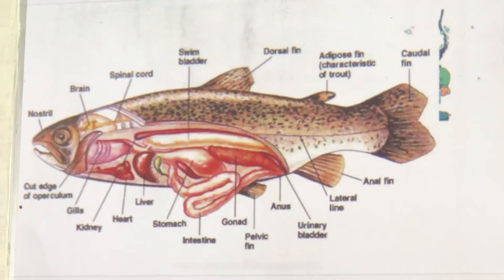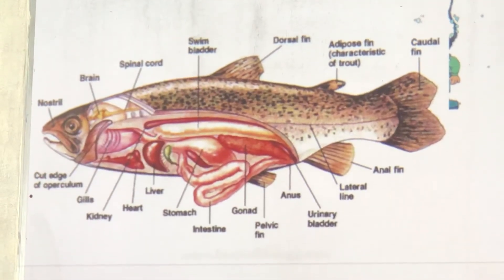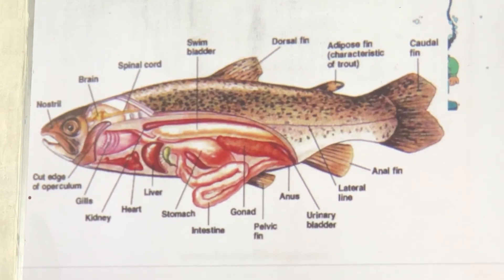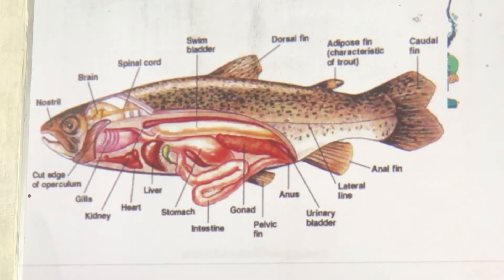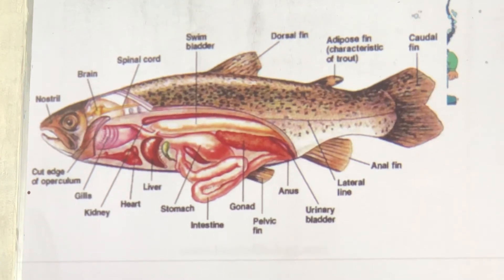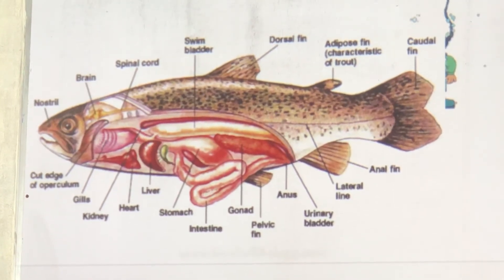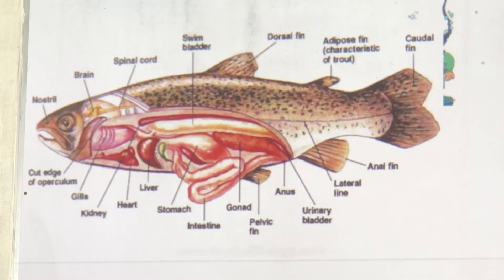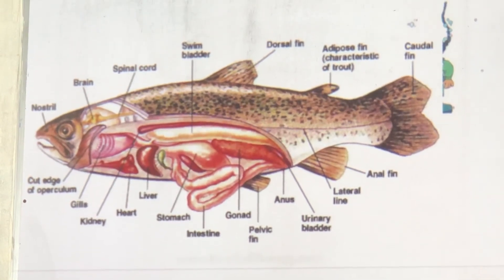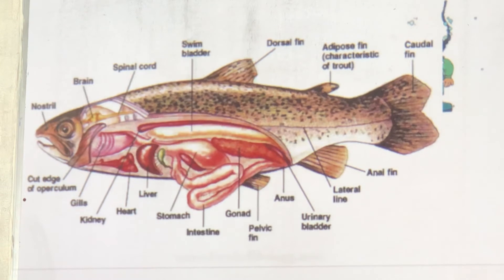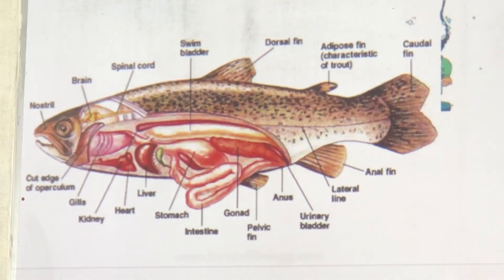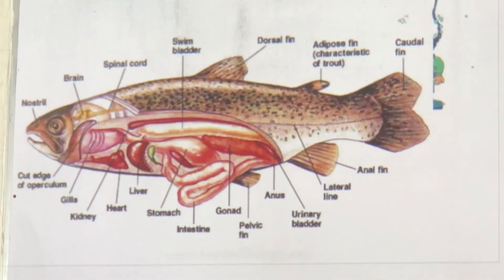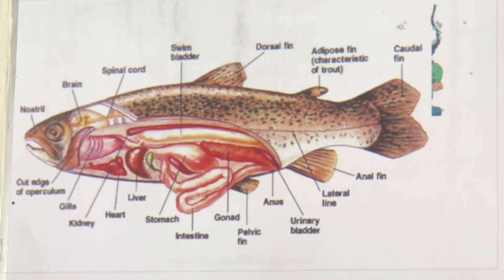This is how a bony fish looks inside when cut open. The nostril is there, brain is there, spinal cord is there, and the swim bladder is visible. There is a dorsal fin, and in trout an adipose fin. At the tail end there is the caudal fin, at the bottom an anal fin next to the anus, and the pelvic fin below. Internal organs — heart, liver, kidney — are all present.